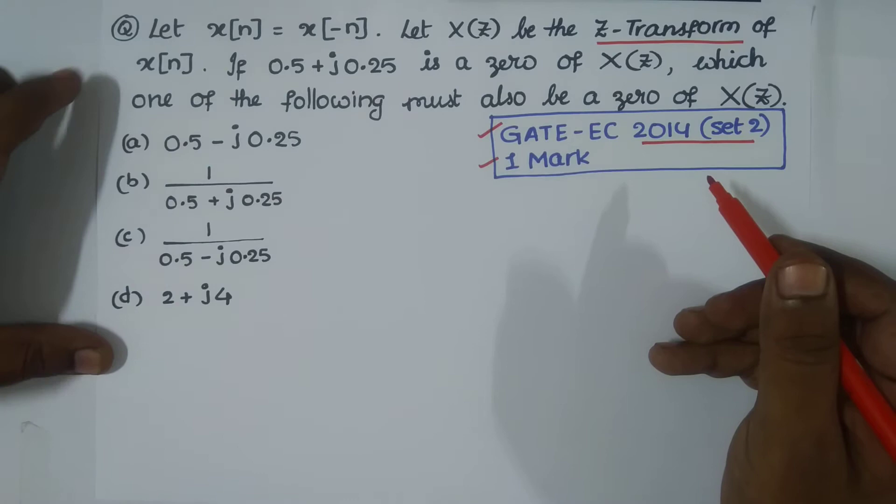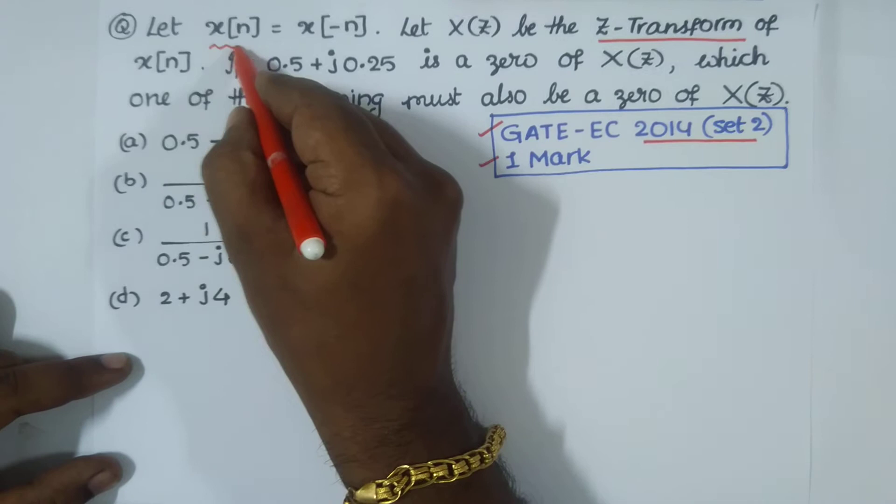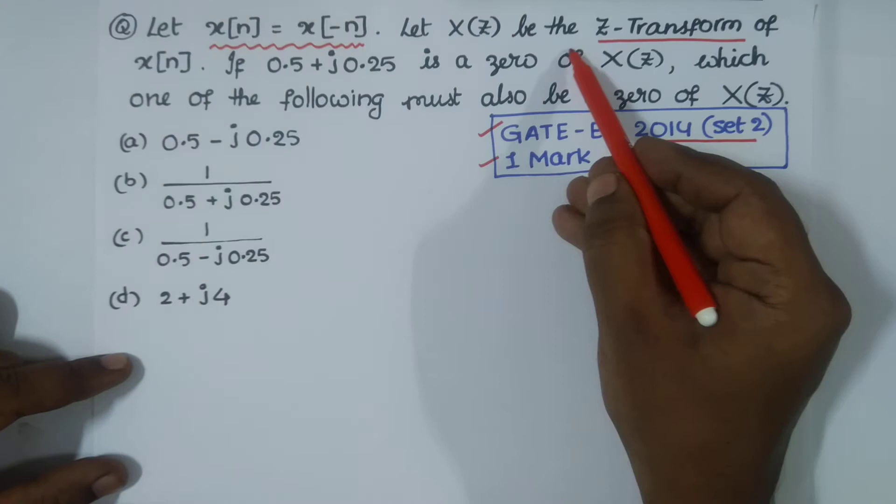It is given like this: Let X[n] equal X[-n], and let X(Z) be the Z-transform of X[n].